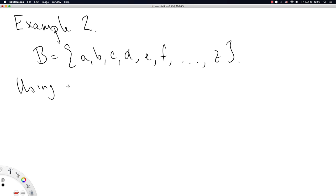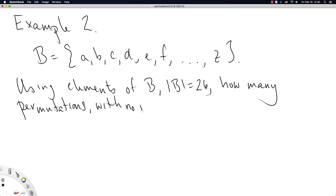Let B be the set of English letters. Using elements of B, the cardinality of B is 26. How many permutations with no repeats of length k are there?